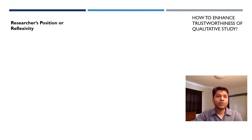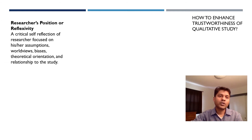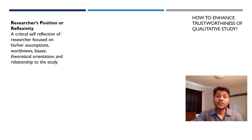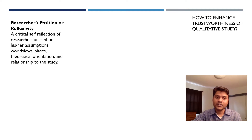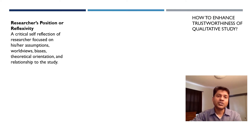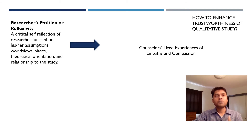Another common way of improving trustworthiness of a qualitative study is through researcher positionality or reflexivity. Researcher reflexivity is a critical self-reflection of the researcher which addresses the researcher's assumptions, worldviews, biases, theoretical orientation, and how the researcher is related to the study. In the manuscript, you talk briefly about your own position in relation to the study, and we call this researcher reflexivity.